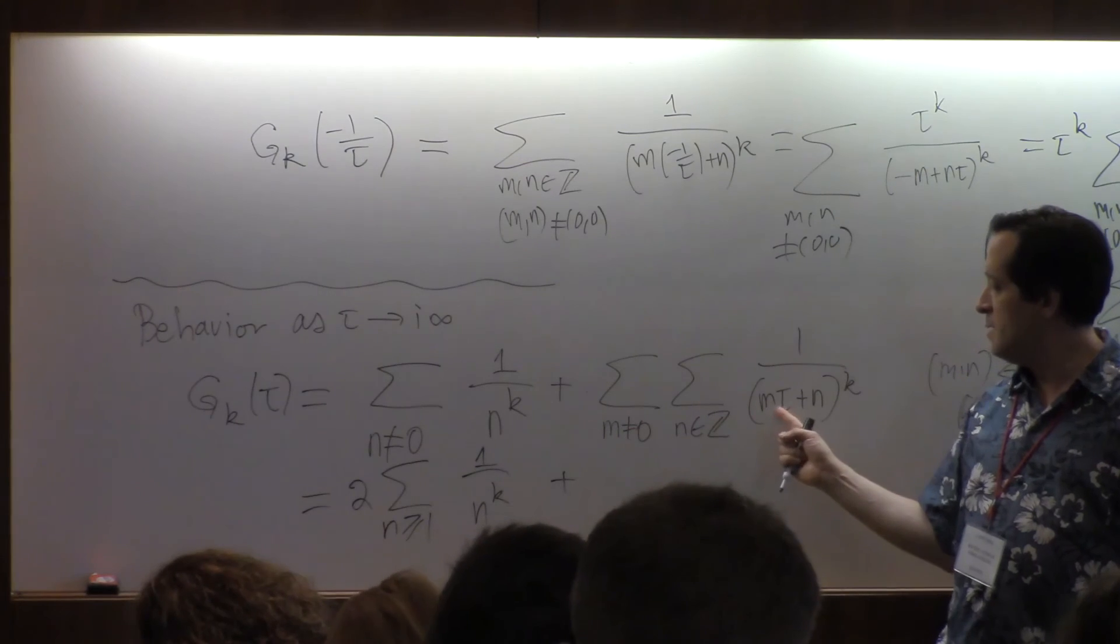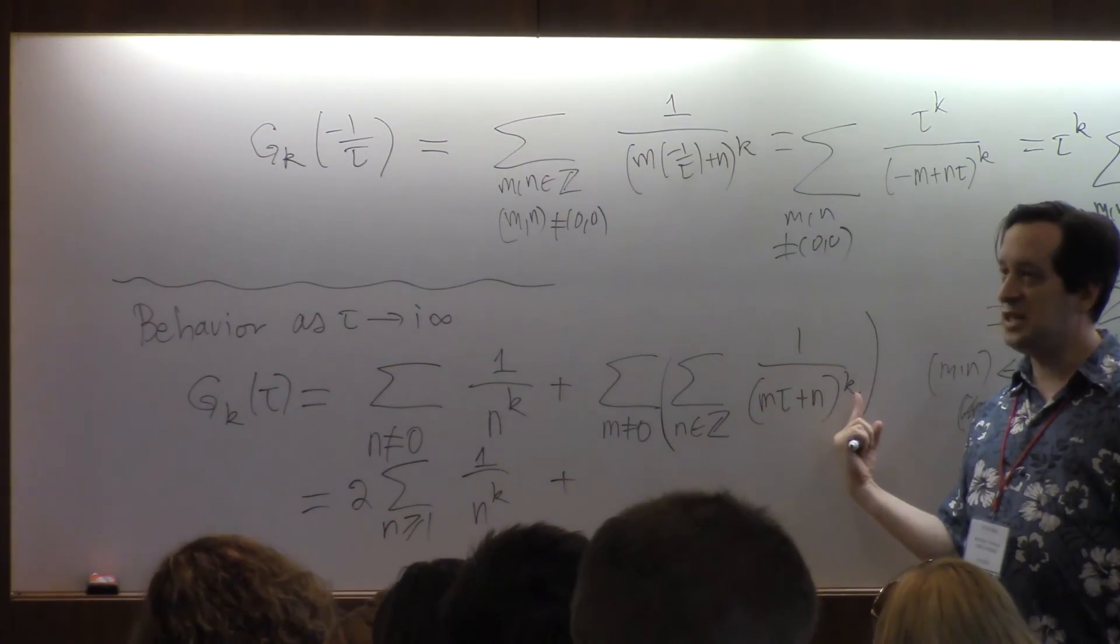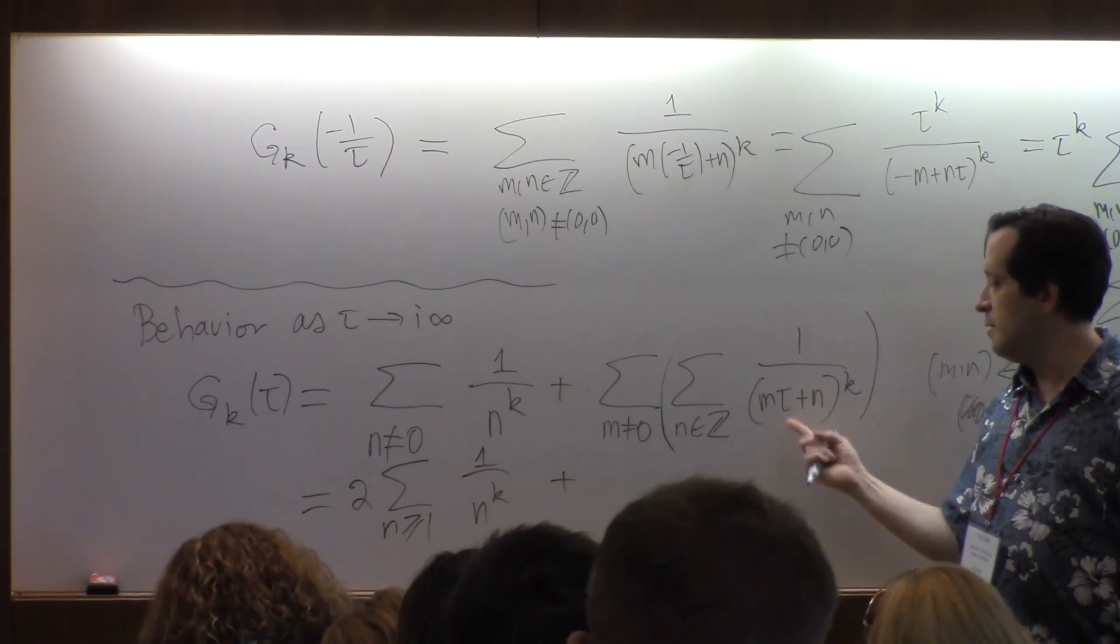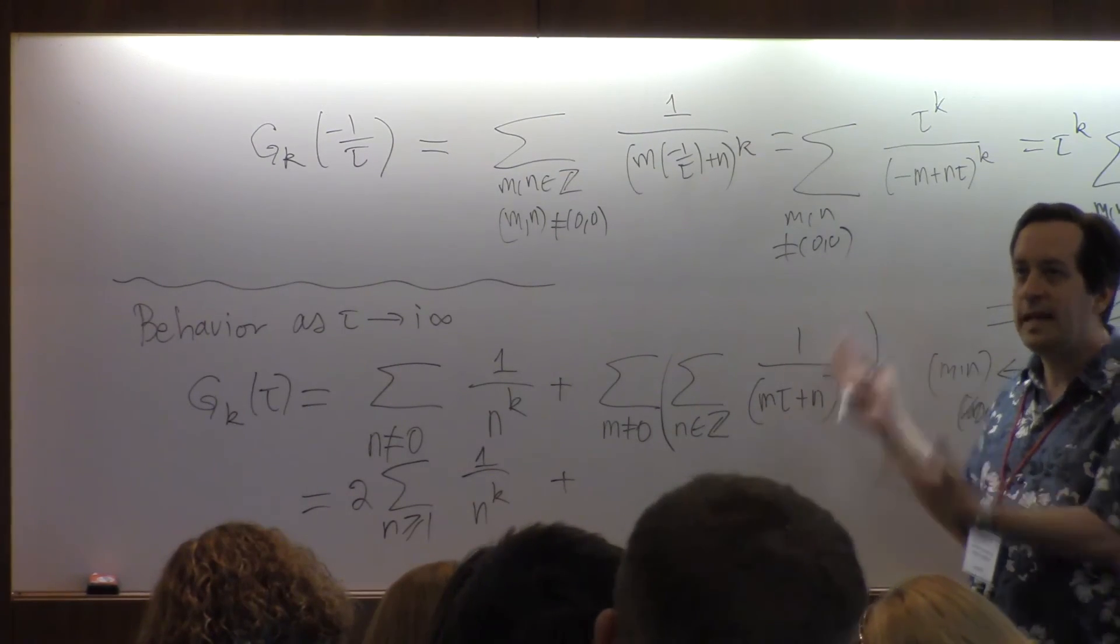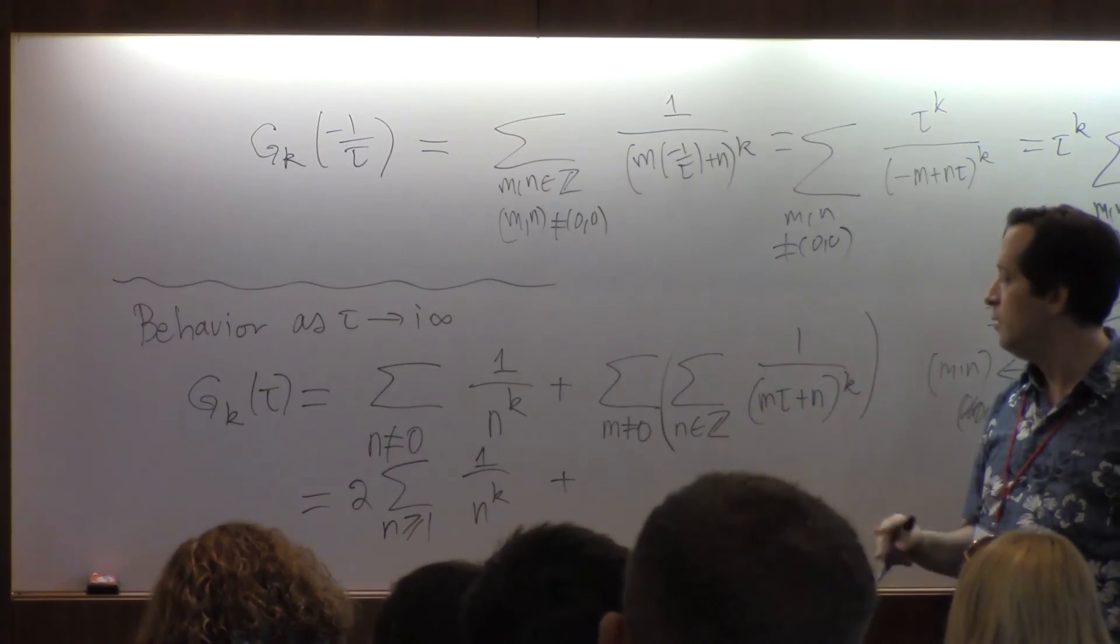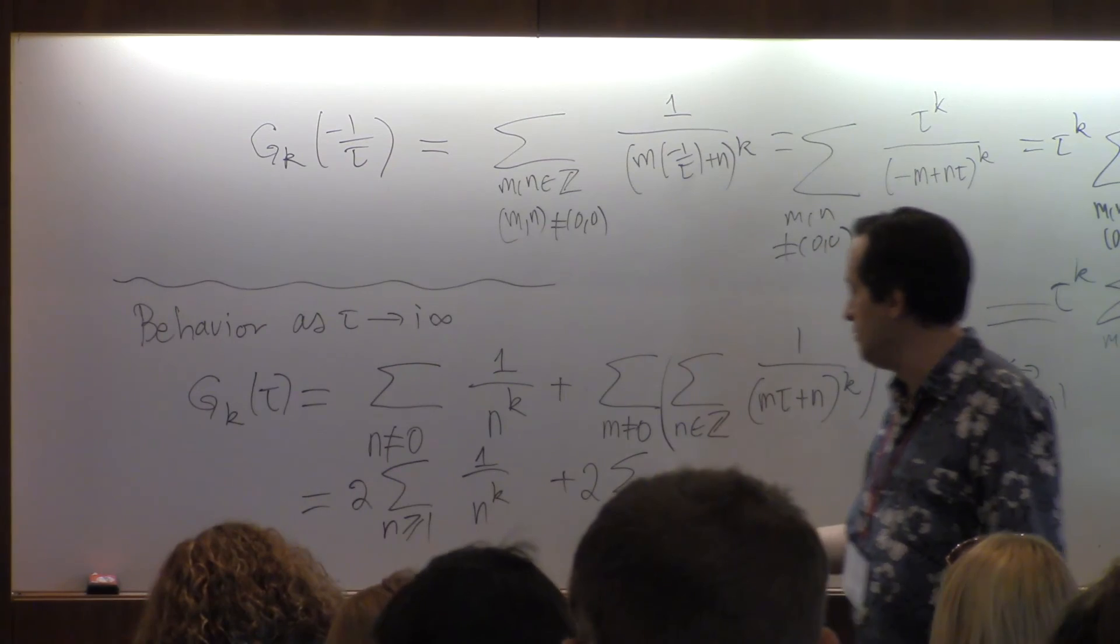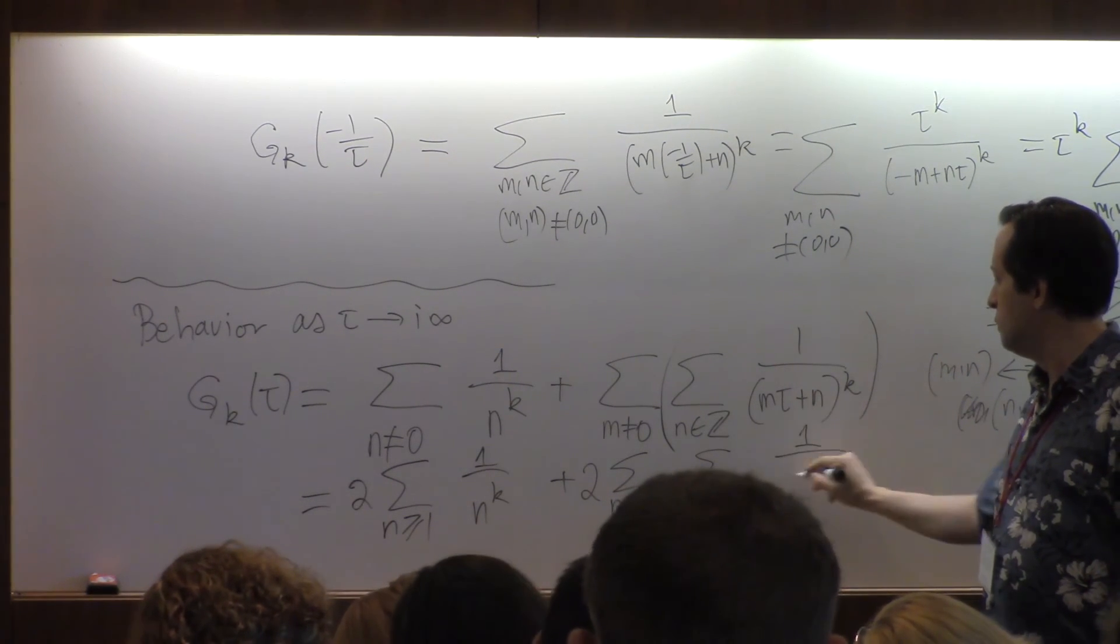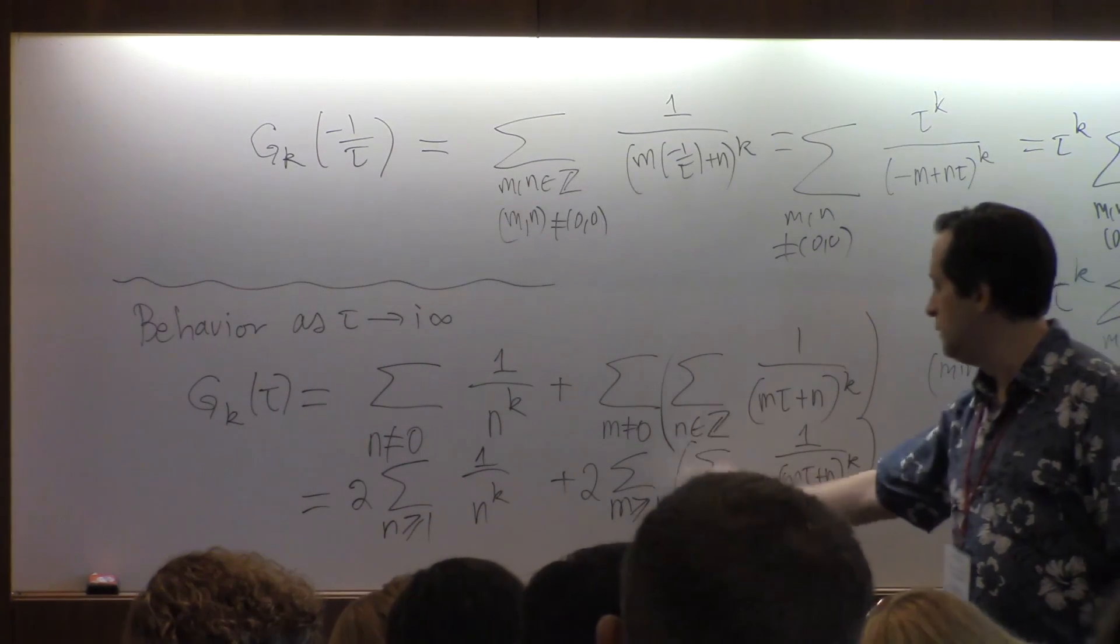And here again, if m, the whole inner sum, since k is even, if you have the sum with an m over all n and the sum with a minus m over all n, it's the same series over all n. And so I can write the sum over double the sum over all integers, 1 over m tau plus n to the k.